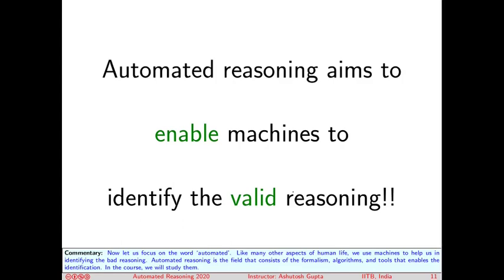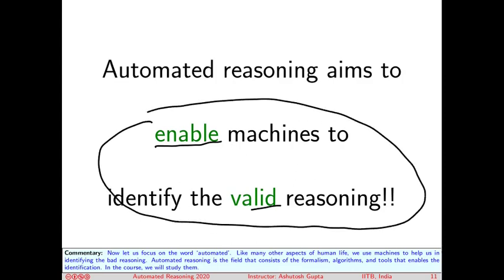If we want to separate good reason from bad reason, it's better to do with some assistance. Let's seek assistance from computers. As we do in our lives, anything we want to do, we say can this be done by machines, why should I be doing it? So we want to enable machines to do this reasoning, to identify which one is valid reasoning, which is invalid. This whole area of identification of good reasoning from bad reasoning is called automated reasoning.